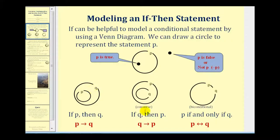For the converse, if we switch the order of the hypothesis and conclusion, we would have if Q then P. Notice how we also switch the sets P and Q, so if Q is true, it's guaranteed that P would also be true.